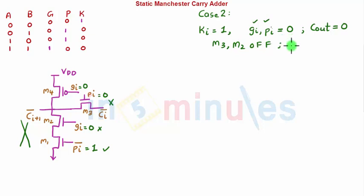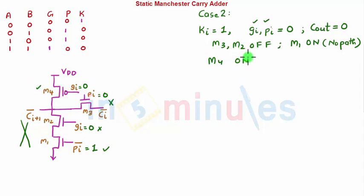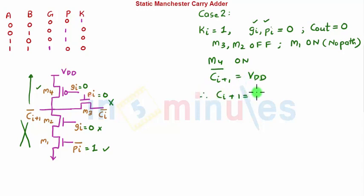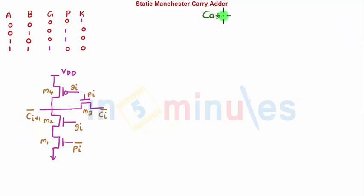Since GI equals 0 is applied to the PMOS M4, M4 turns on and pulls the output toward VDD. So CI-plus-1-bar equals VDD, meaning CI-plus-1 equals 0, which is C-out equals 0 — exactly what we wanted. Functionality is achieved for Case 2.